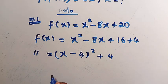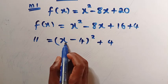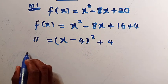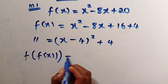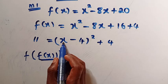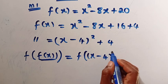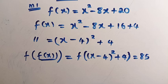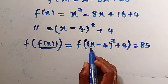Now for the composite function f of f of x, we introduce f of x as the input. So anywhere we see x, it becomes x minus 4 squared plus 4. Therefore f of f of x equals f of (x minus 4 squared plus 4), which gives us f of (x minus 4 raised to power 2 plus 4) equals 85.